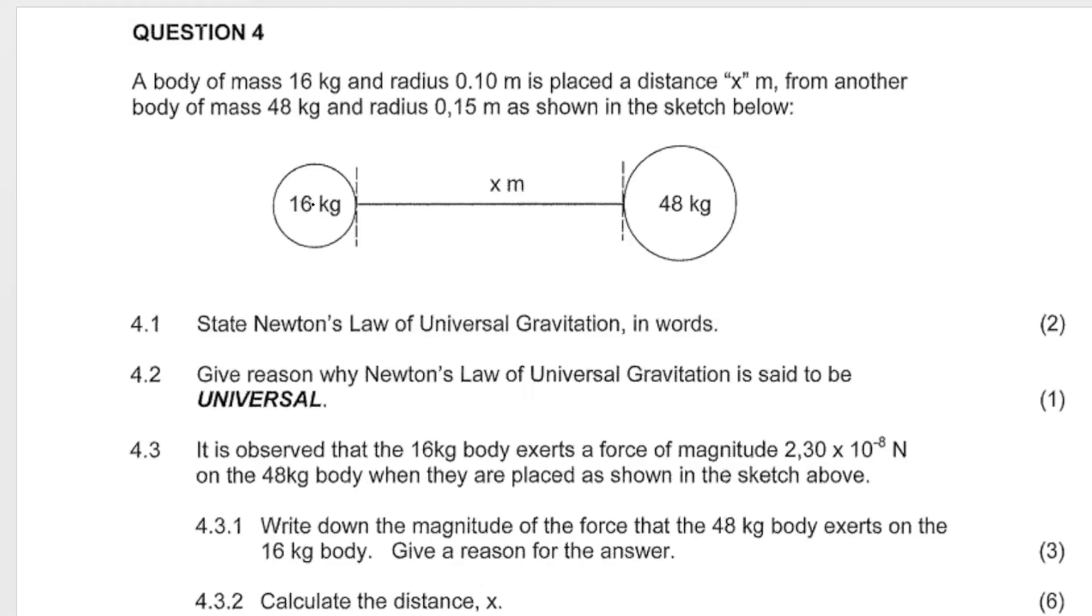Now they don't indicate this on the diagram but obviously the radius is from the center of the object to the outer end of the object to the circumference. So this radius here is 0.1 and this object's radius here is 0.15.